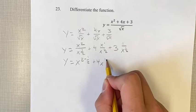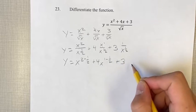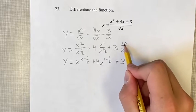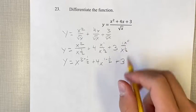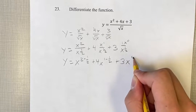1 minus 1 half plus 3, and you can think of this as x to the 0, since x to the 0 is 1. So we have x to the 0 minus 1 half.